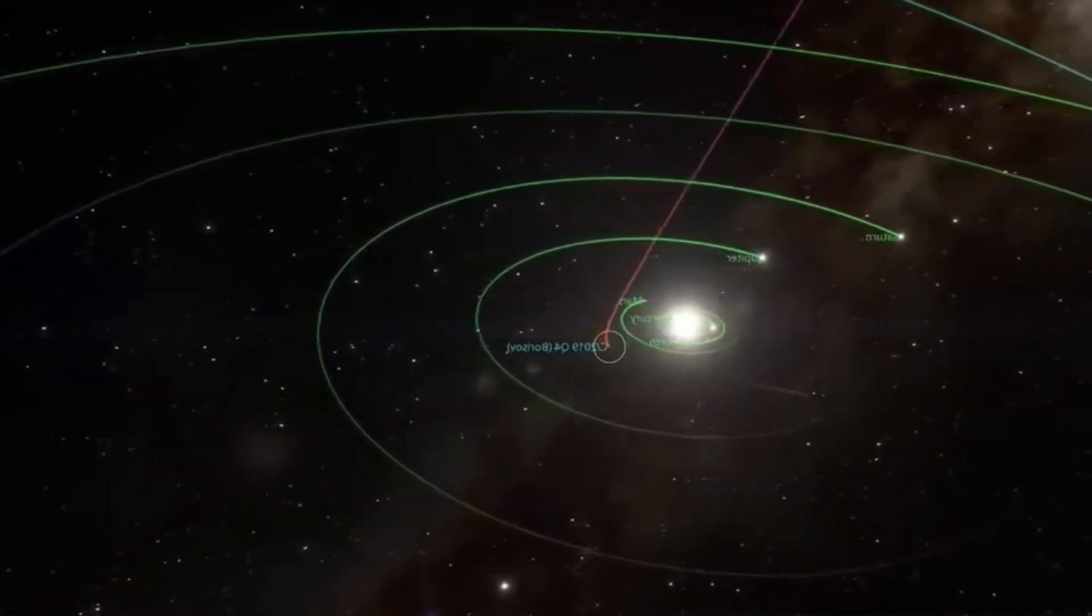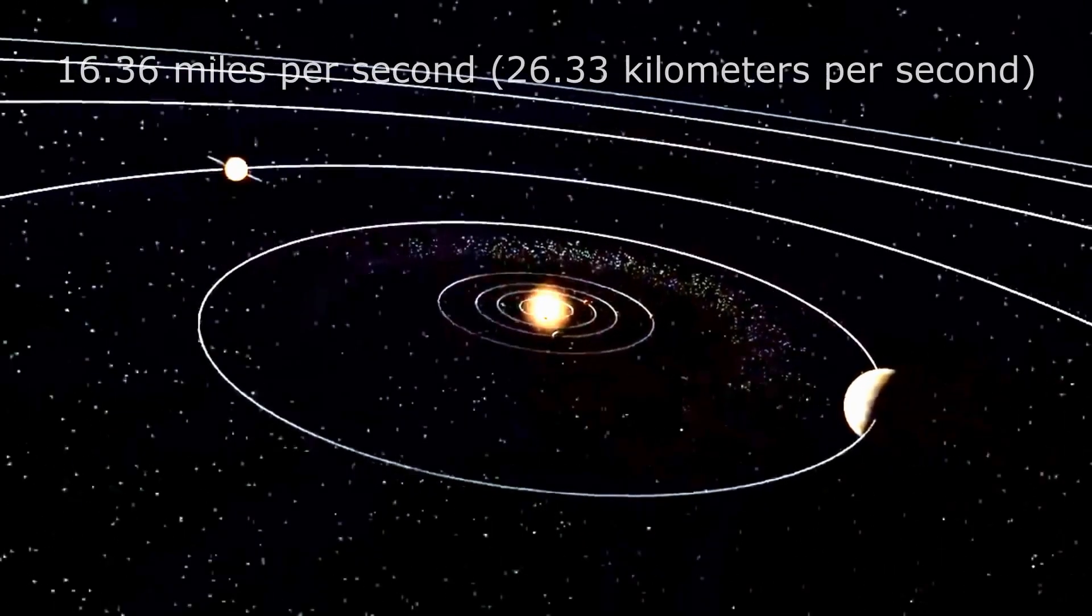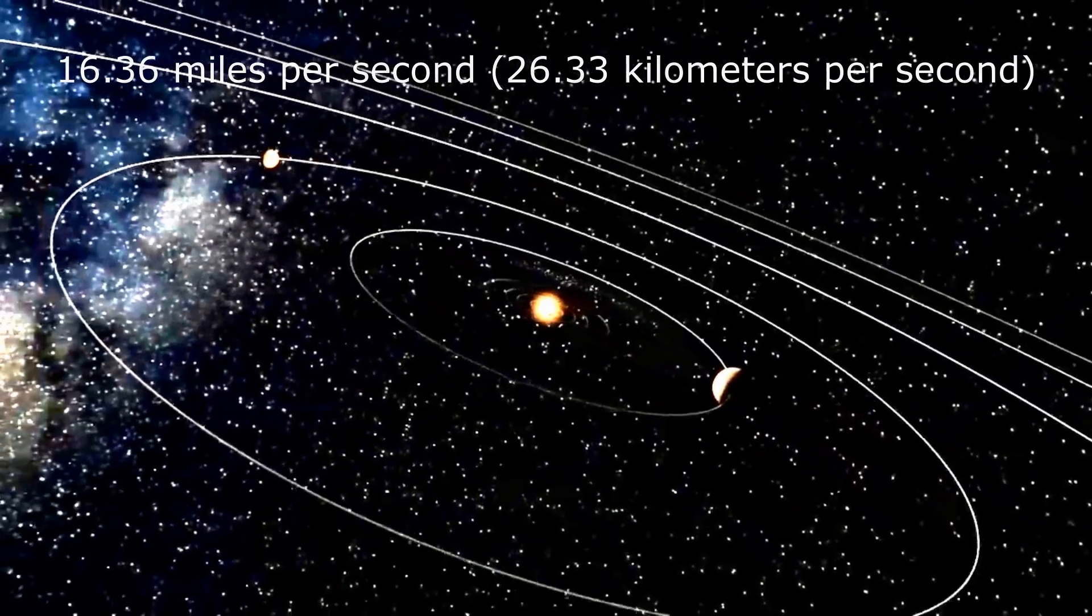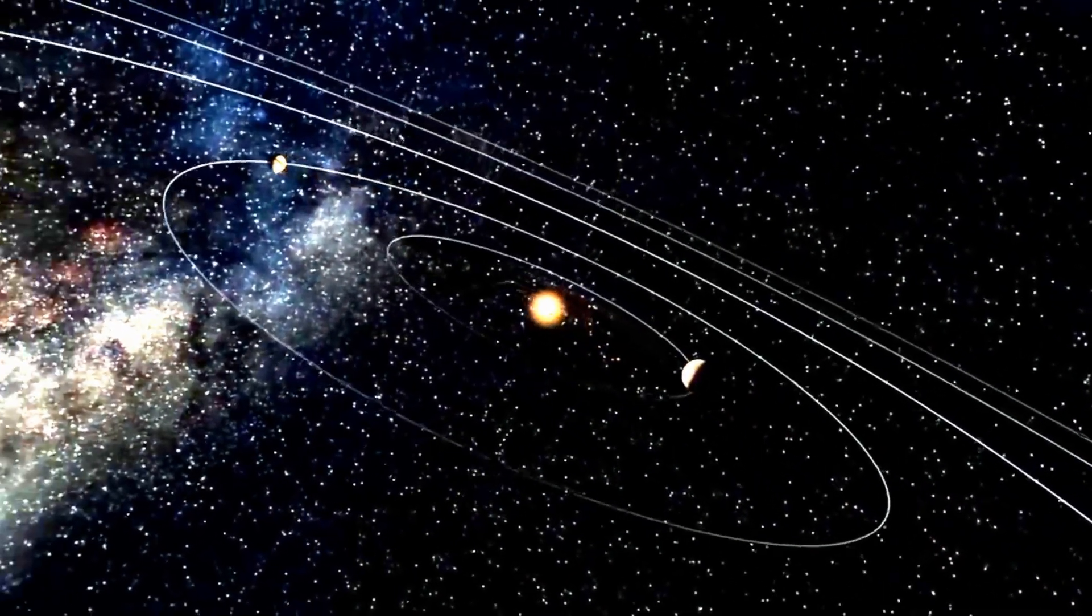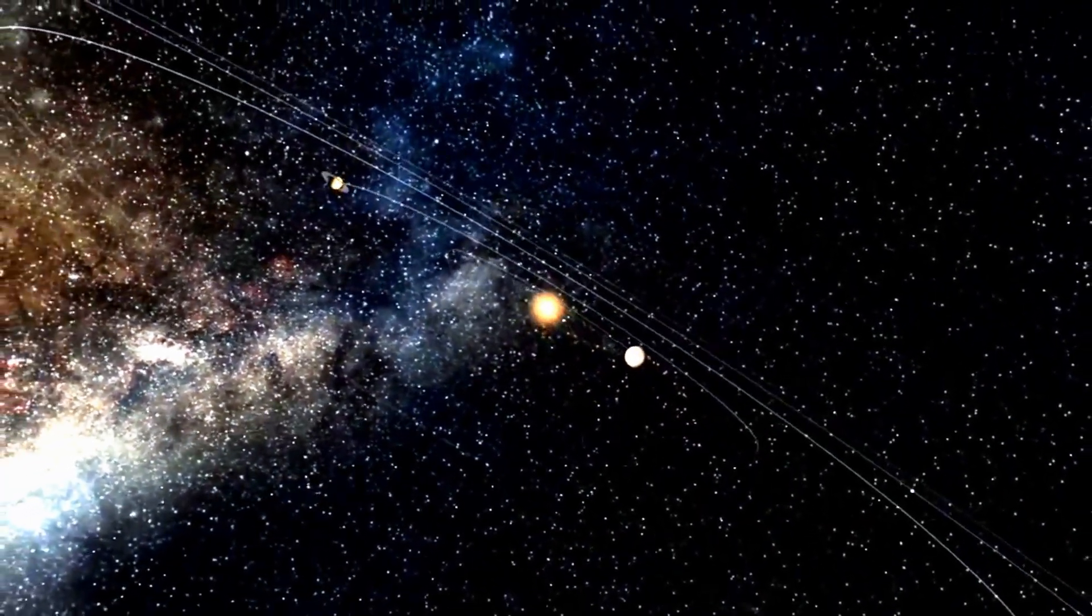This implies that Oumuamua, with a velocity of 16.36 miles per second (26.33 kilometers per second) relative to the sun's motion, possessed the capability to continue its trajectory towards the departure point of the solar system.